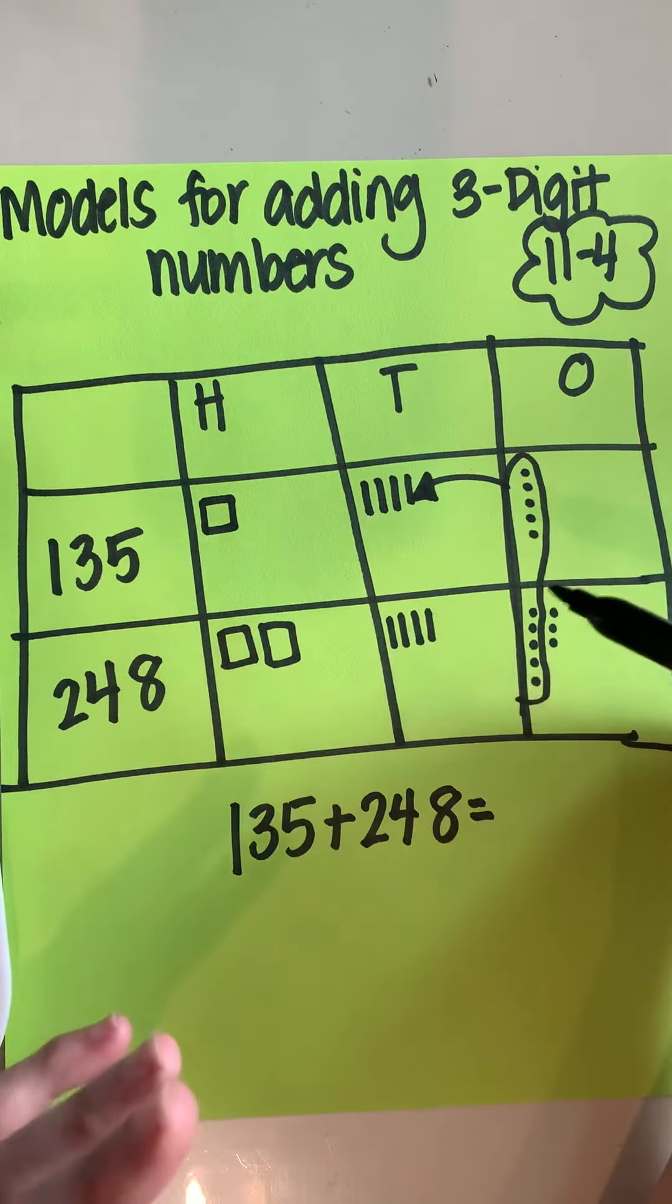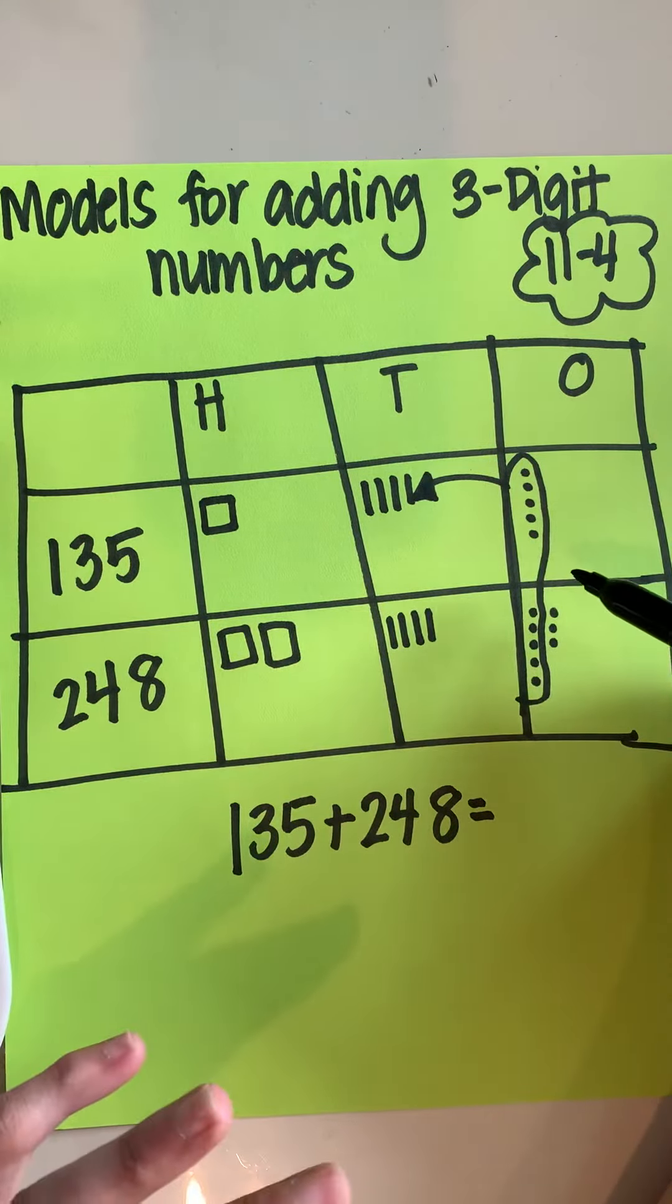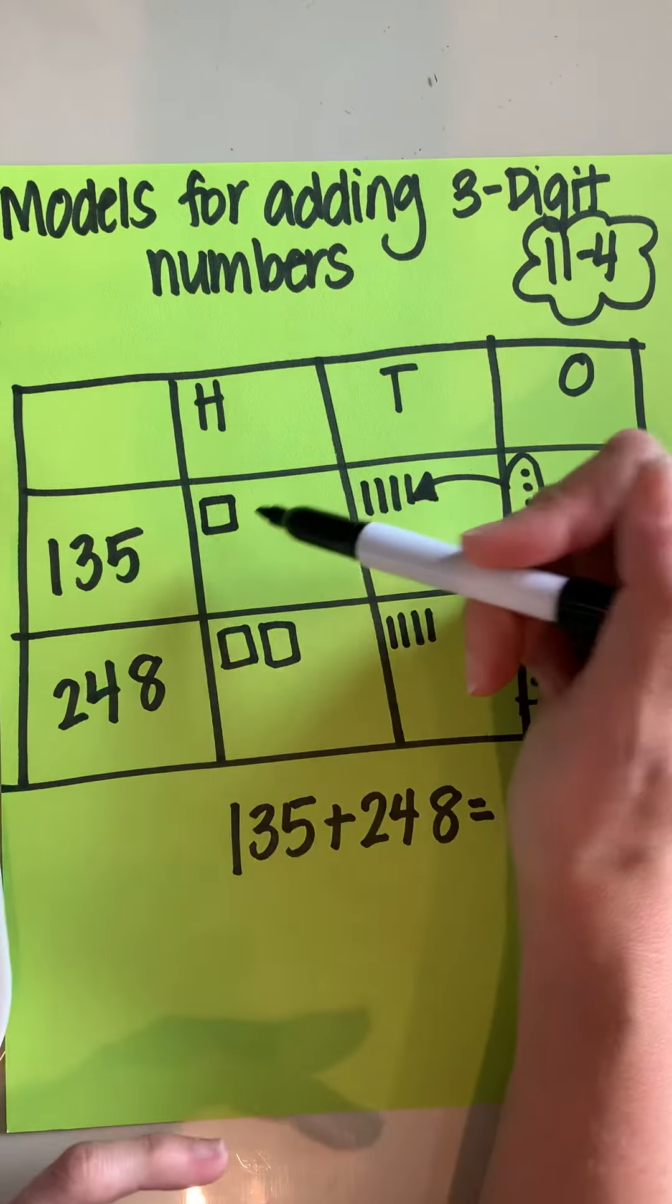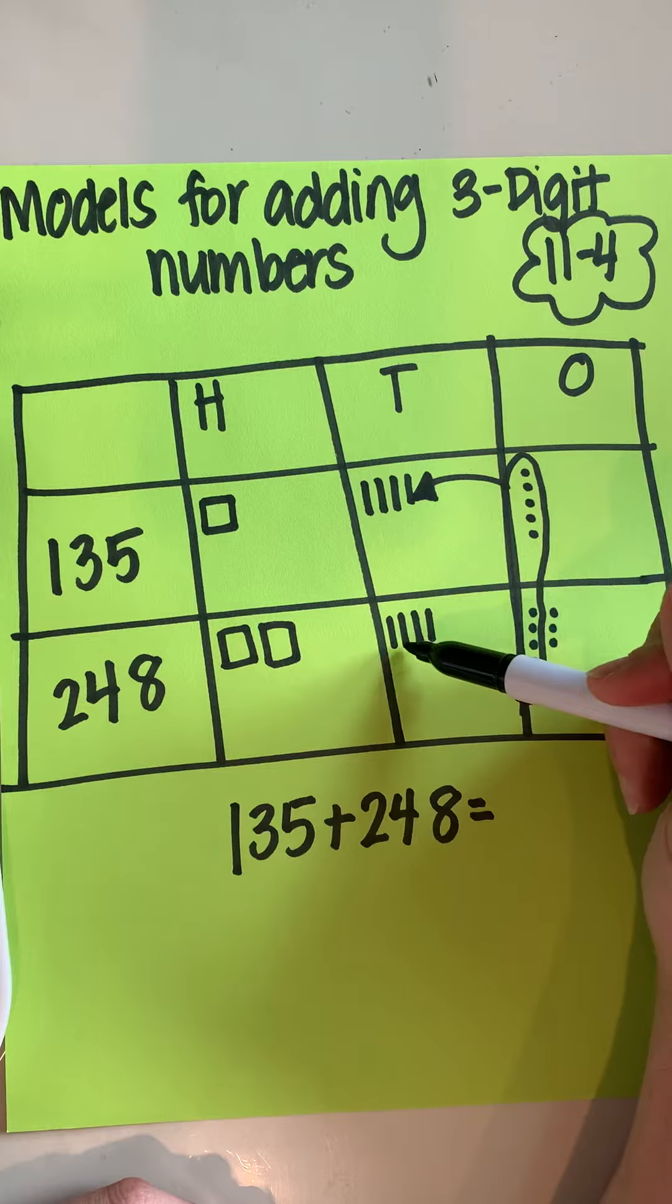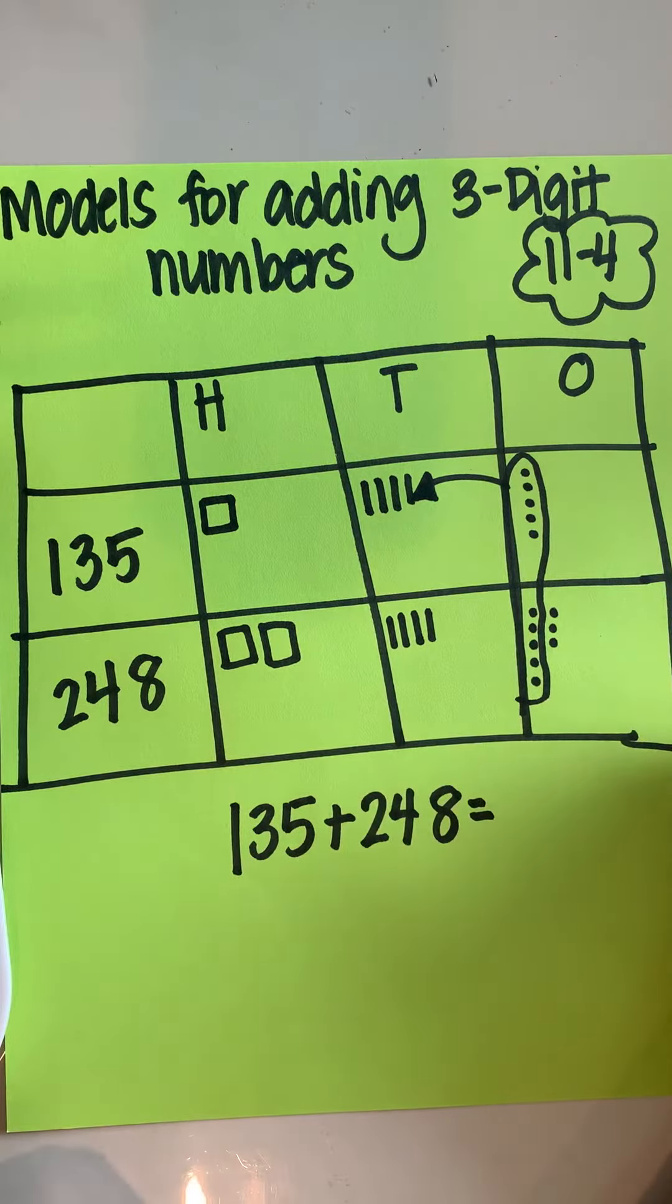And then I'm going to count my tens to make sure that I didn't go over 10, because if I did, then I would have to make a hundred. So I have one, two, three, four, five, six, seven, eight. All right, cool. I am good to go.